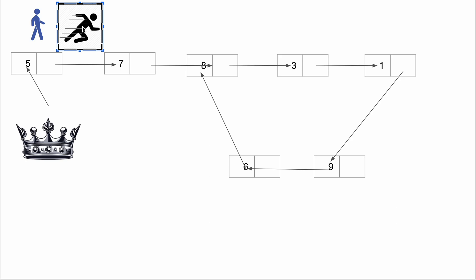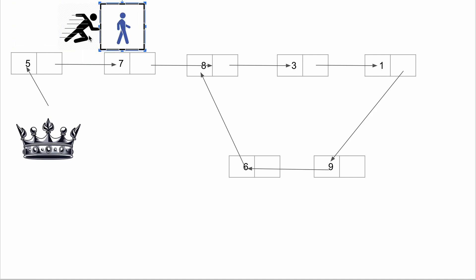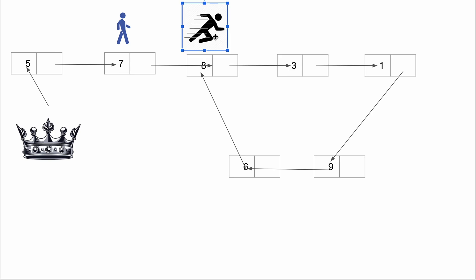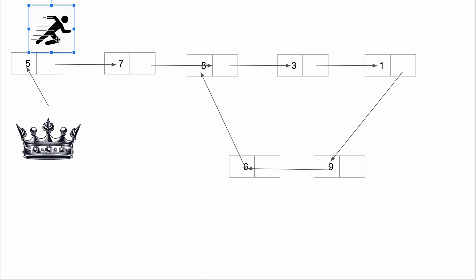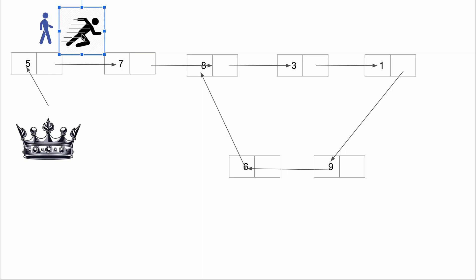What is the difference between them? The fast pointer is in a hurry — it will travel at 2x the speed of the slow pointer. For example, if the slow pointer travels 1 step, the fast pointer will travel 2 steps at a time.